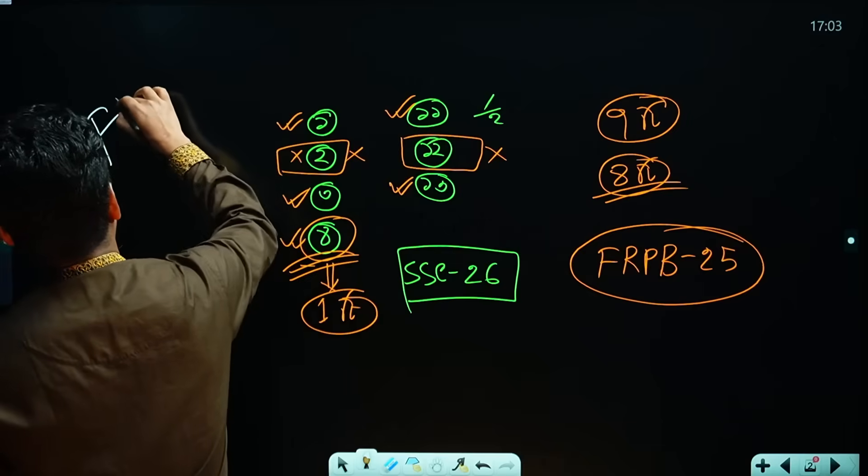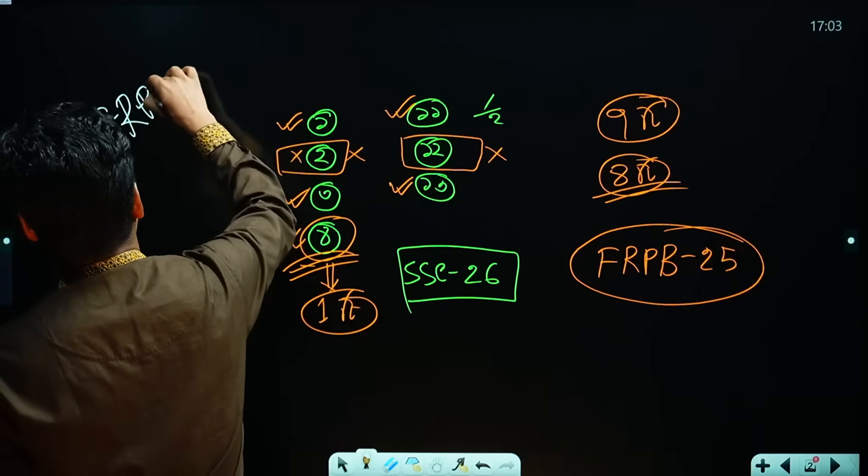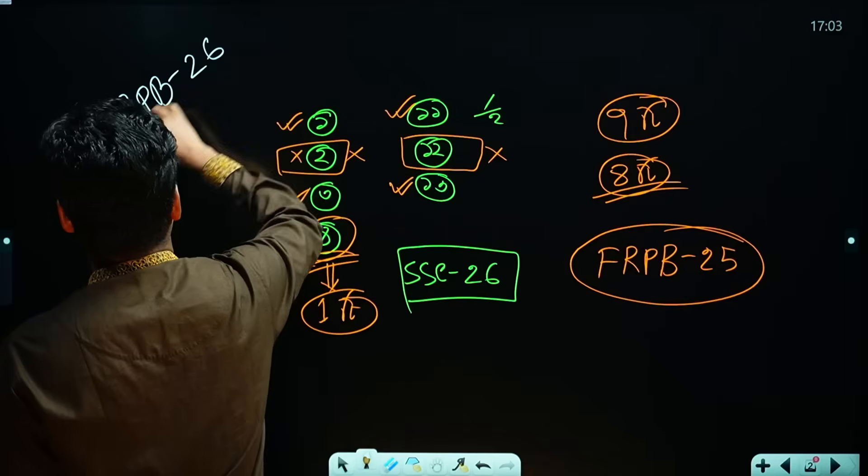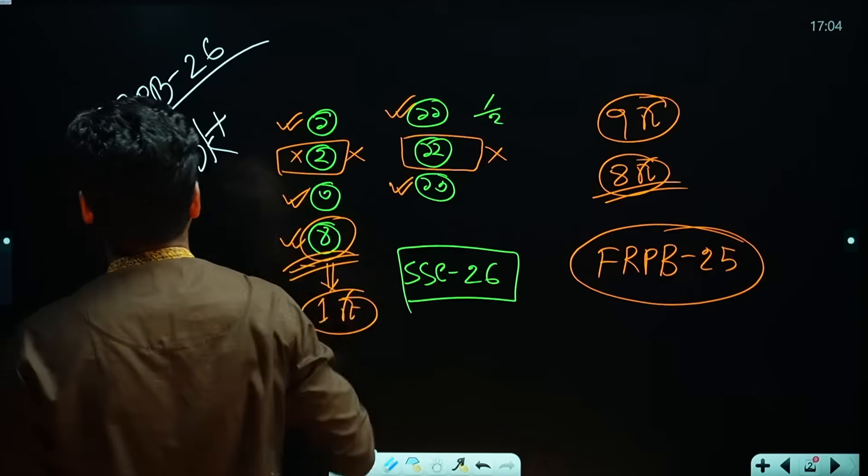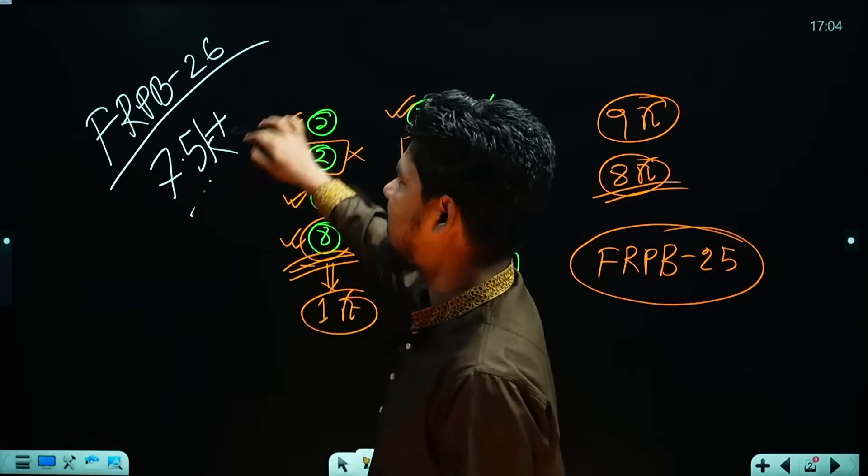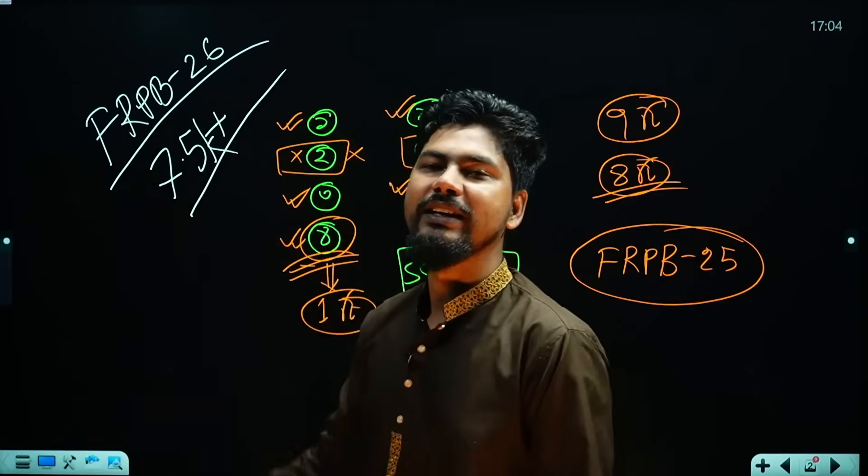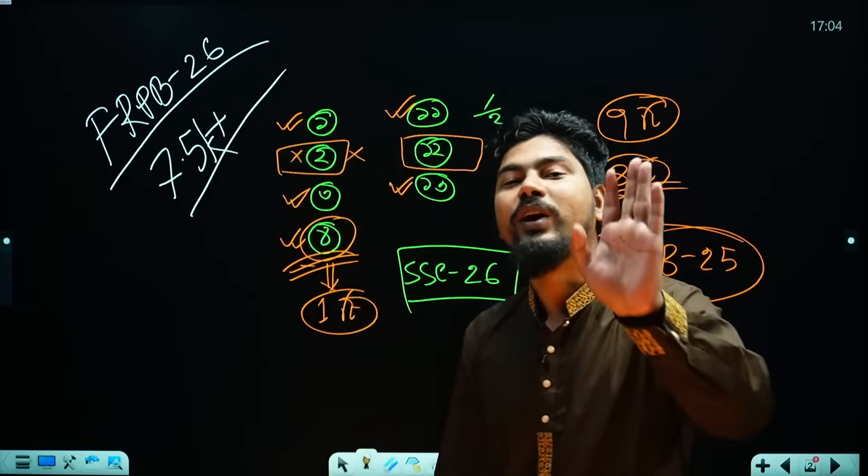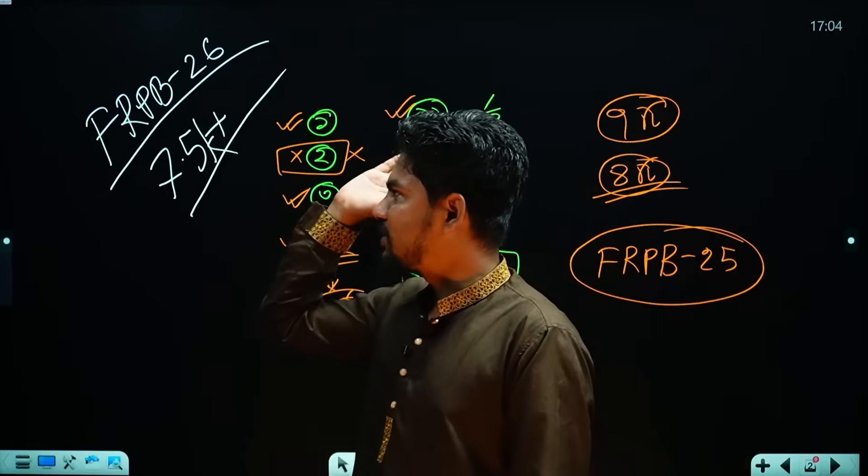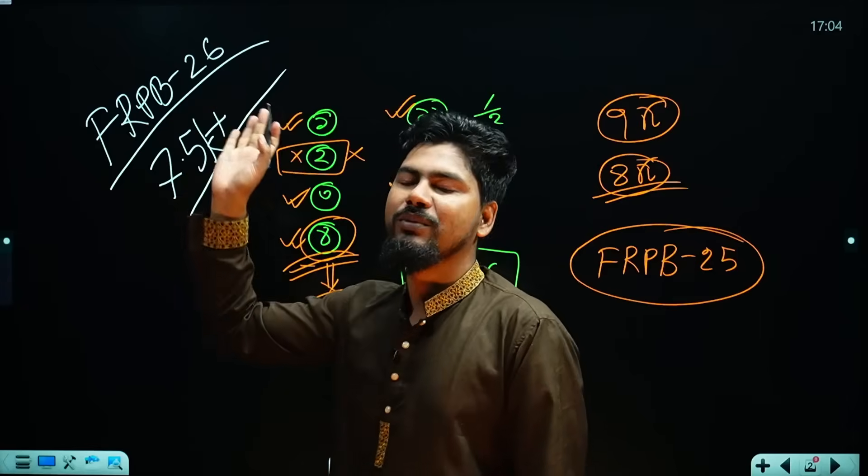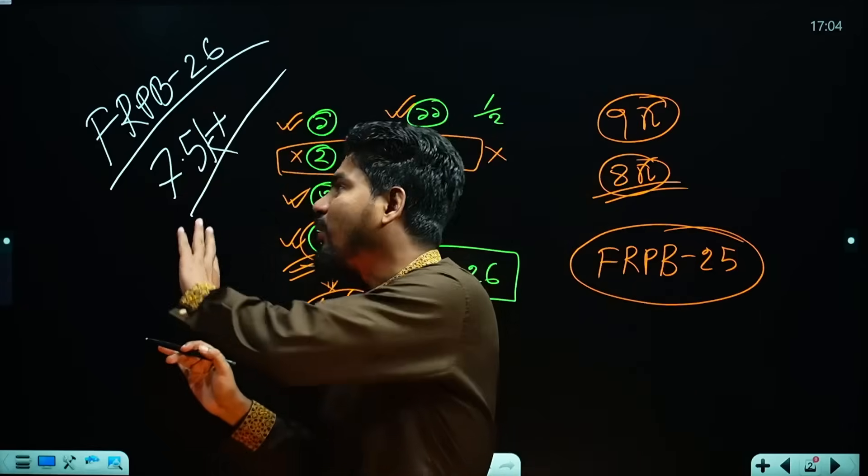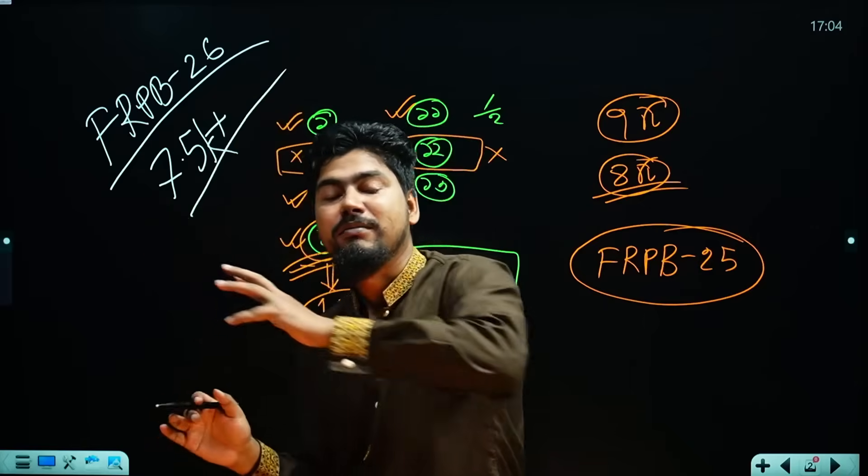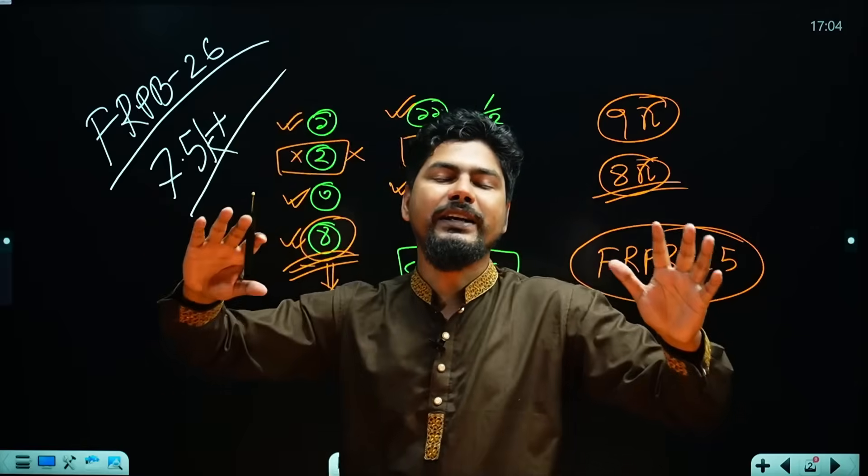FRPB 26 Look, Final Revision Premium Batch 26 has already joined us, but how many? A thousand and a half plus students have joined us. A thousand and a half plus students before the test. The main admissions are done after the test. So seven thousand and a half students have already been admitted to our FRP 26. And you know that this FRP 26 is so much that we cannot show so many celebrity teachers in any course in Bangladesh.